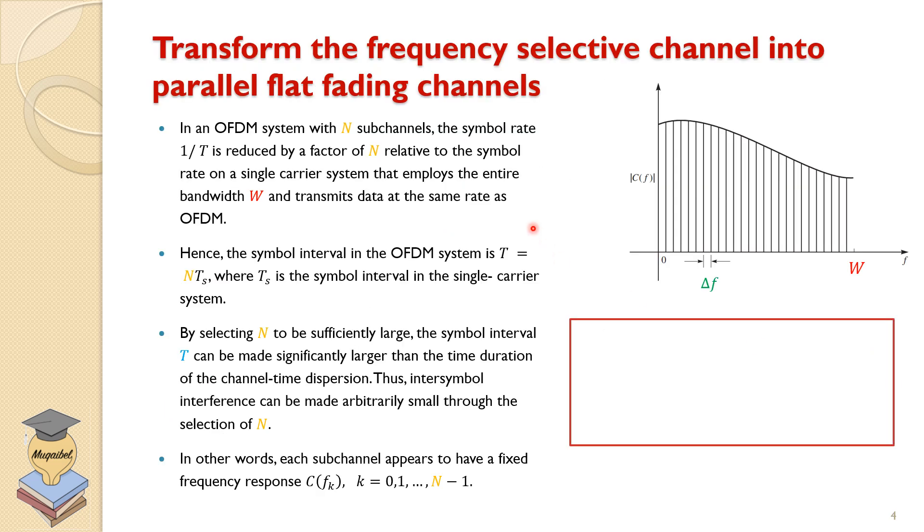Now, recall what we said about multi-channel or multi-carrier system. We will apply that to OFDM. So this is just a recap. An OFDM system with N sub-channels divides the bandwidth into N sub-channels, and the symbol rate would be 1 over T, where T is the symbol duration. Of course, the symbol rate should be reduced by a factor of N, because we'll be sending multiple symbols at the same time. So the symbol rate is reduced by a factor of N relative to the symbol rate on a single carrier system that employs the entire bandwidth. Hence, the symbol interval in OFDM system is N times T_s, where T_s is the symbol interval for a single carrier system.